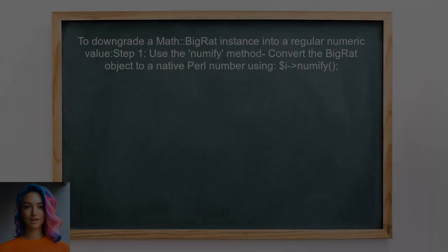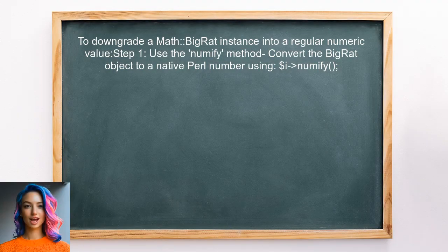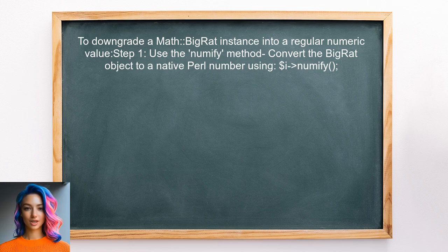To downgrade a MathBigRat instance into a regular numeric value, the user should first understand that they need to convert the BigRat object into a native Perl number. This can be done using the Numify method.